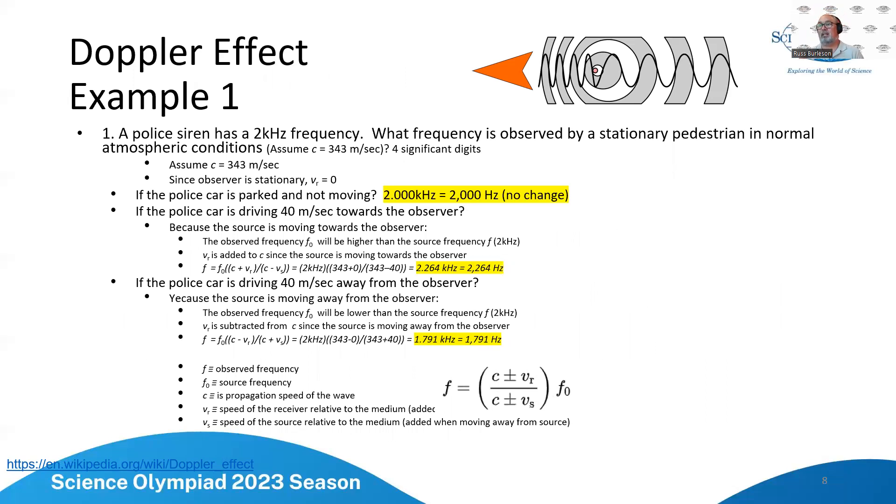So you'll notice if it's parked and not moving, there is no change in the frequency so it is still two kilohertz. Now if it's driving towards the observer, I expect the frequency to go up. So using that equation I come out with the new frequency is 2.264 kilohertz or 2264 hertz. If the police car is driving 40 meters per second away from the observer, I expect the frequency to go down and it goes down to 1791 hertz or 1.791 kilohertz.